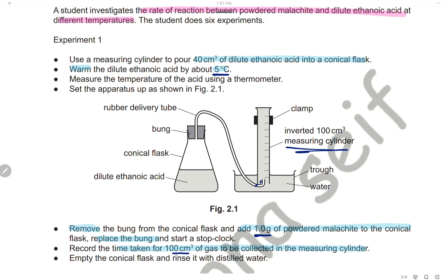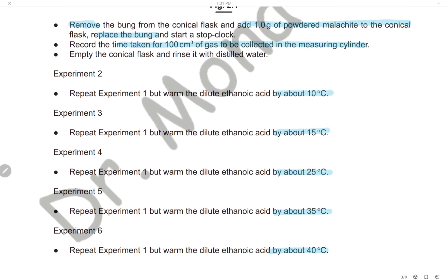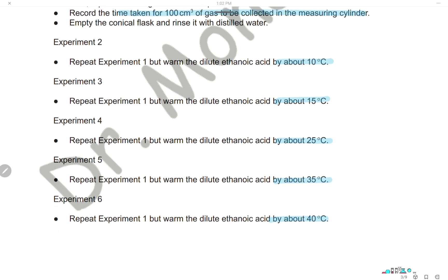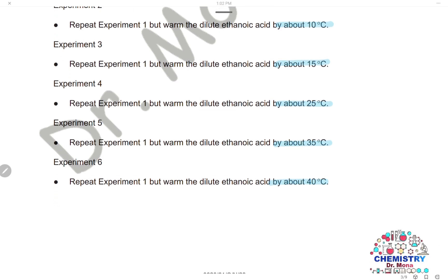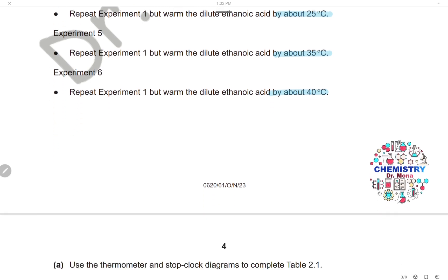Remove and clean the flask, and rinse it with distilled water. Experiment 2 will be done at about 10°C. Experiment 3 at 15°C, then 25°C, 35°C, and finally in experiment 6 we heat it to about 40°C.